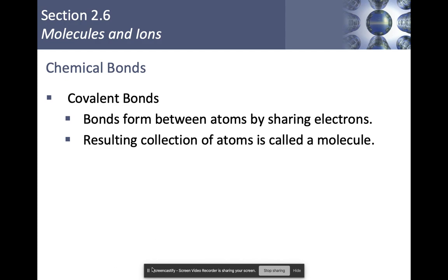Chemical bonds. So we have covalent bonds. Covalent bonds are bonds that form between atoms that are sharing their electrons. When we look at a chemical that has covalent bonds in it, the resulting collection of atoms is known as a molecule. So technically molecules are covalently bonded chemicals.